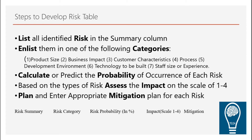Then calculate the probability of each risk and assess the impact. If a risk falls in the business impact category or involves a technological upgrade outside the project manager's control, it must be rated as very high impact. As discussed in the last video, different types of risk have different impacts. Finally, you define the plan to mitigate those risks.